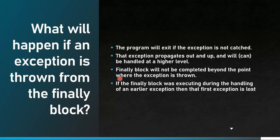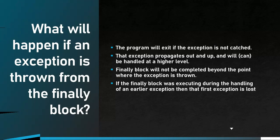One important point: if there is a try-catch-finally and in the try block exception A gets raised, and then in the finally block when you are closing something exception B gets raised, exception A will be suppressed and exception B will propagate back. That is an important point to note.